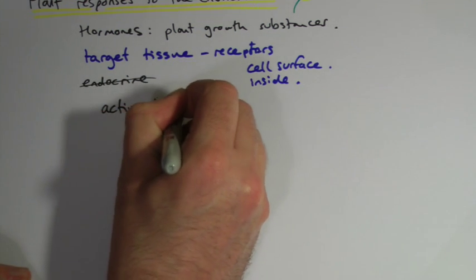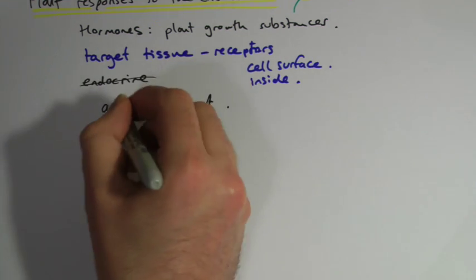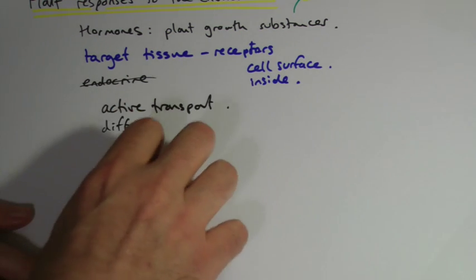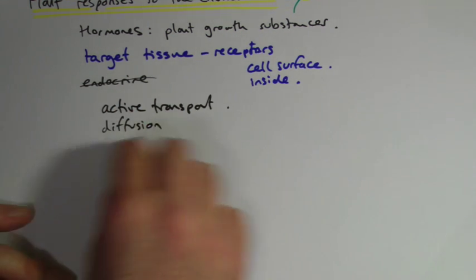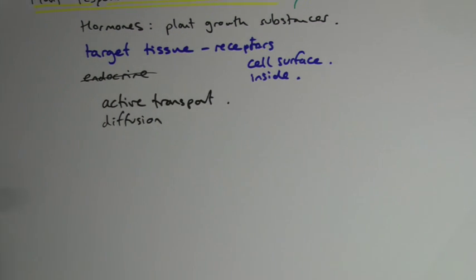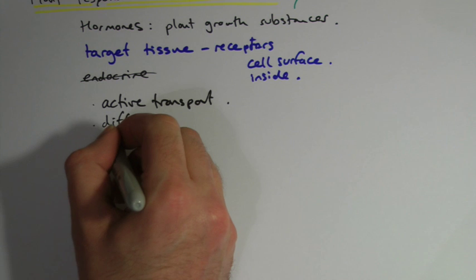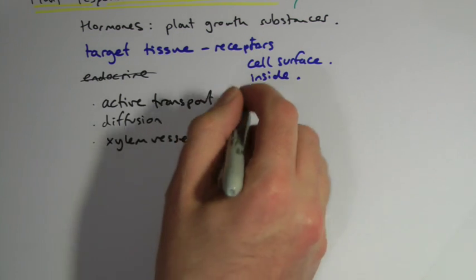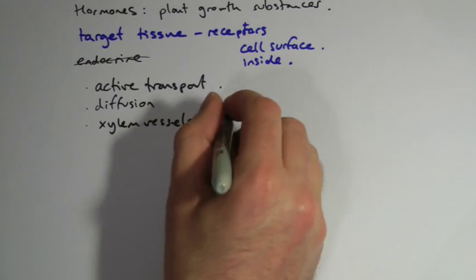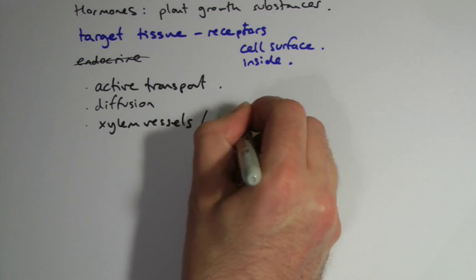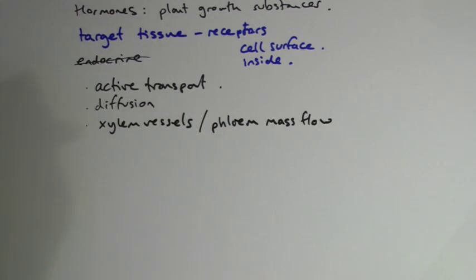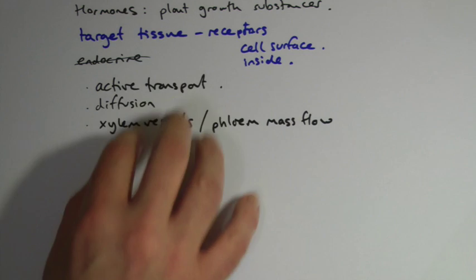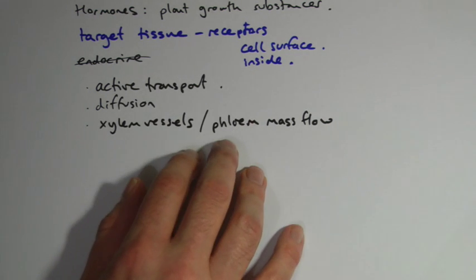Plant growth substances can move through the plant in a variety of ways. Active transport is one way, particularly between cells, and diffusion as well — if there's a high concentration in one place they will diffuse passively into other places. One people forget: they can be transported in xylem vessels as water moves up the plant, and also in the phloem via mass flow.